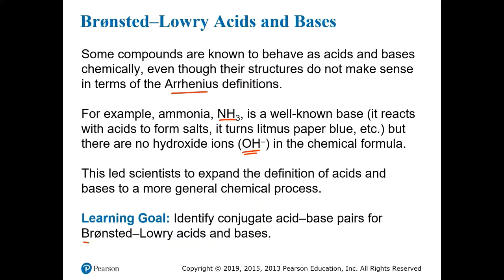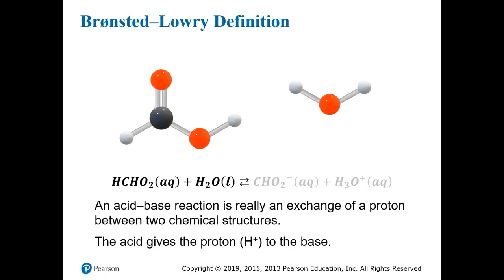And in fact, two scientists, Bronsted and Lowry, working separately from one another, both came to the same conclusions at the same time. They both published their papers in 1923 where they discussed the uniqueness of the hydrogen ion in the definition of acids and bases. Bronsted and Lowry both proposed that an acid-base reaction is not just the dissociation of compounds into ions in water, but rather the transfer or exchange of a proton between two chemical structures.